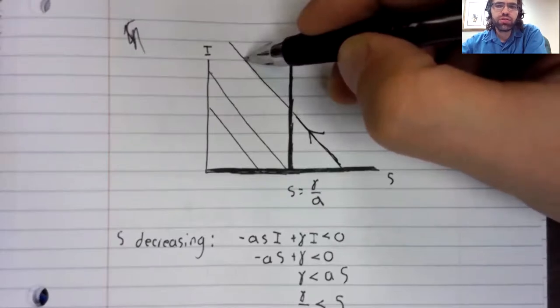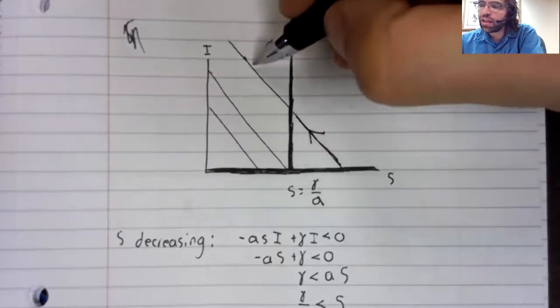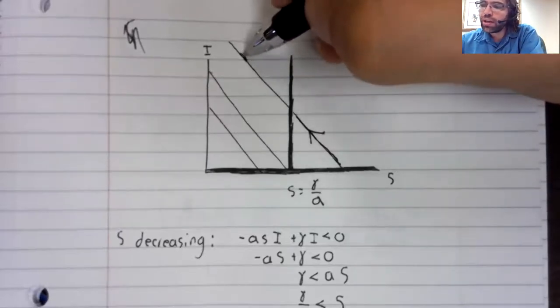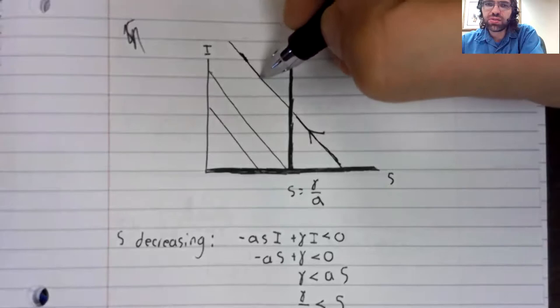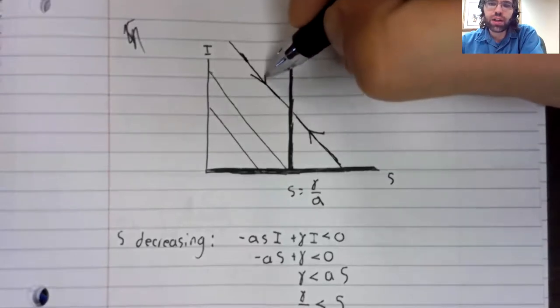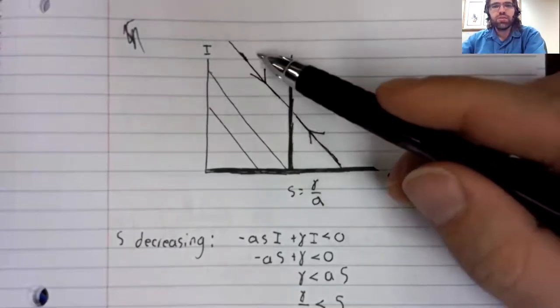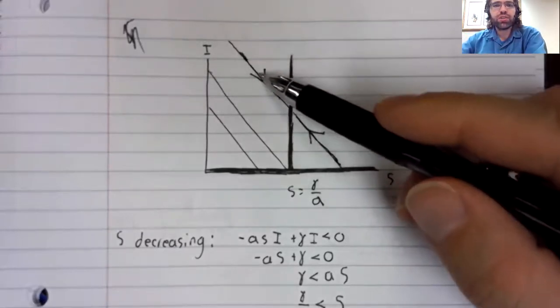And because we're stuck on this line, when we go left to right, we're doing it like this, going down the line. So here's a trajectory.